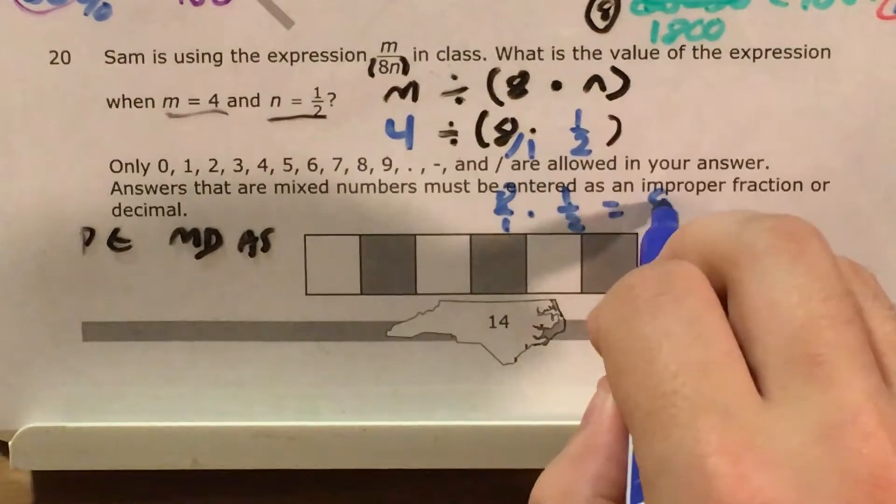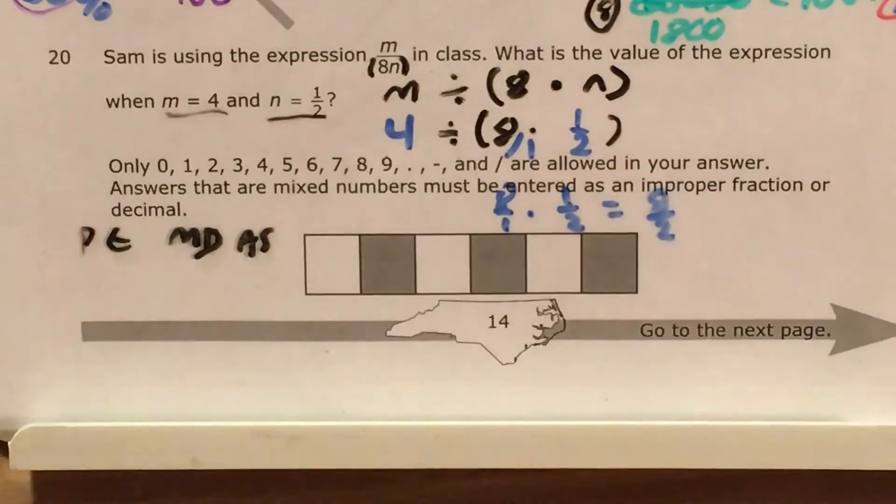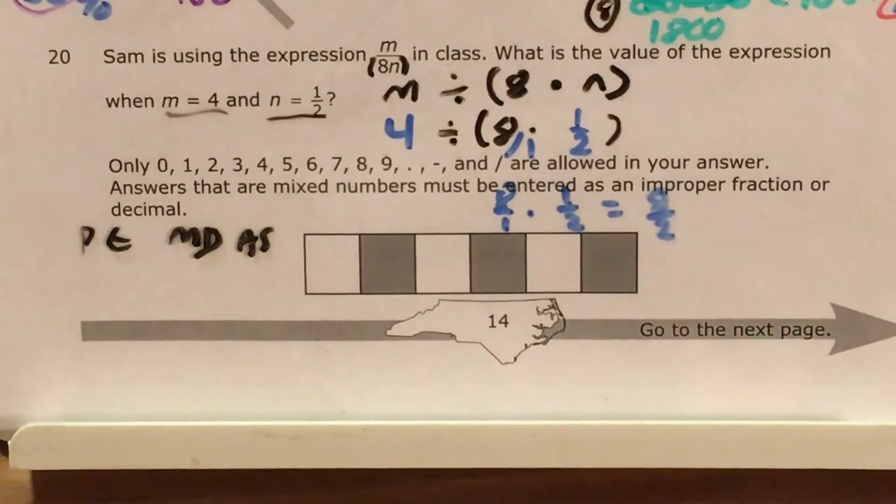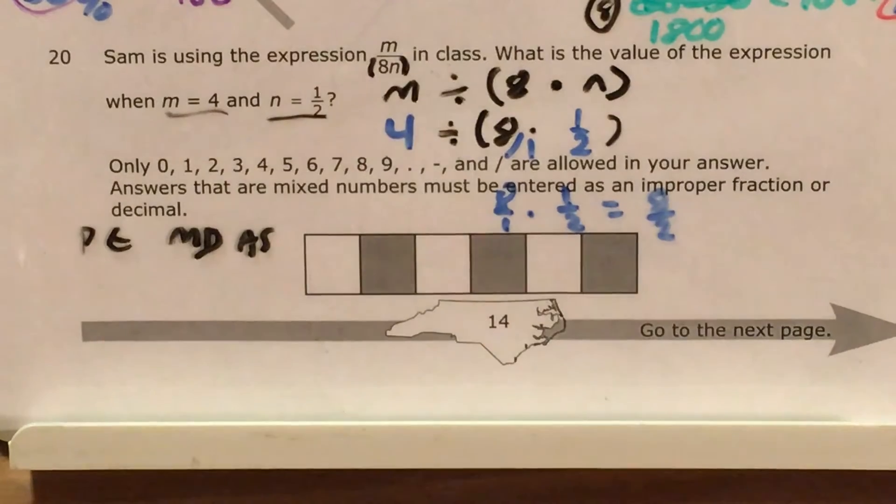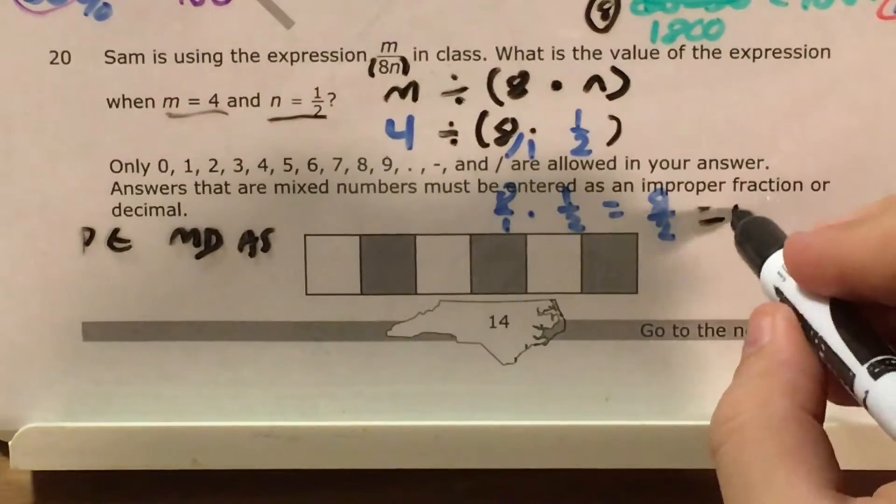8 times 1 gives me 8. 1 times 2 gives me 2. This is 8 divided by 2, which I can simplify or just plug into my calculator and get an answer of 4 for that.